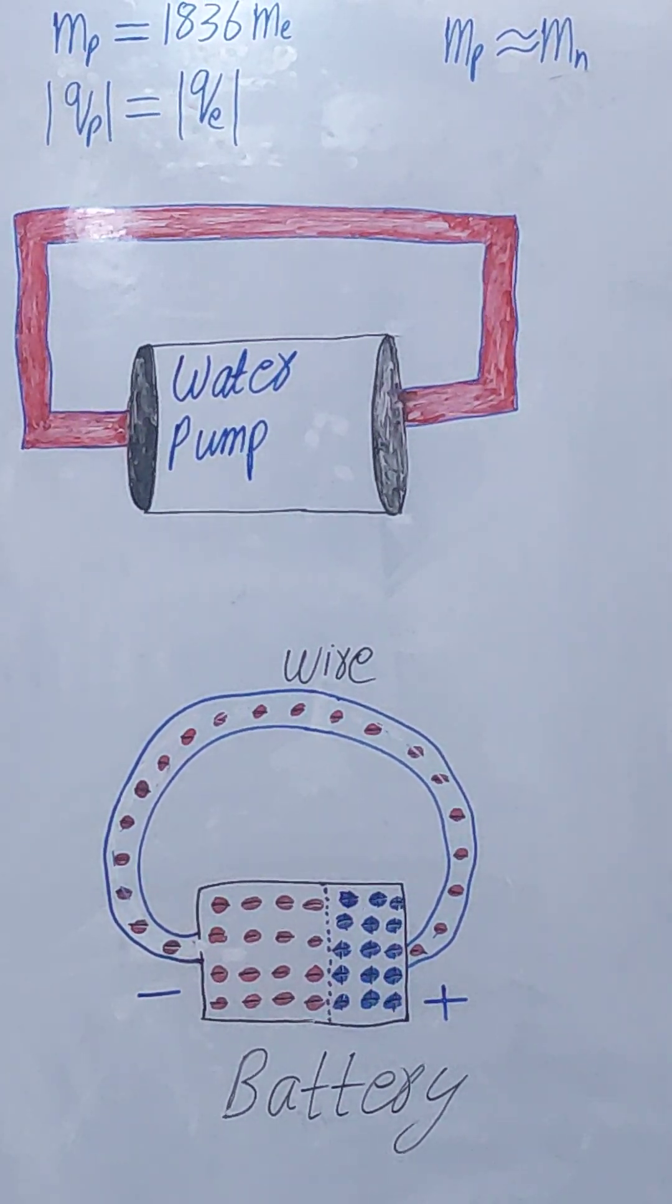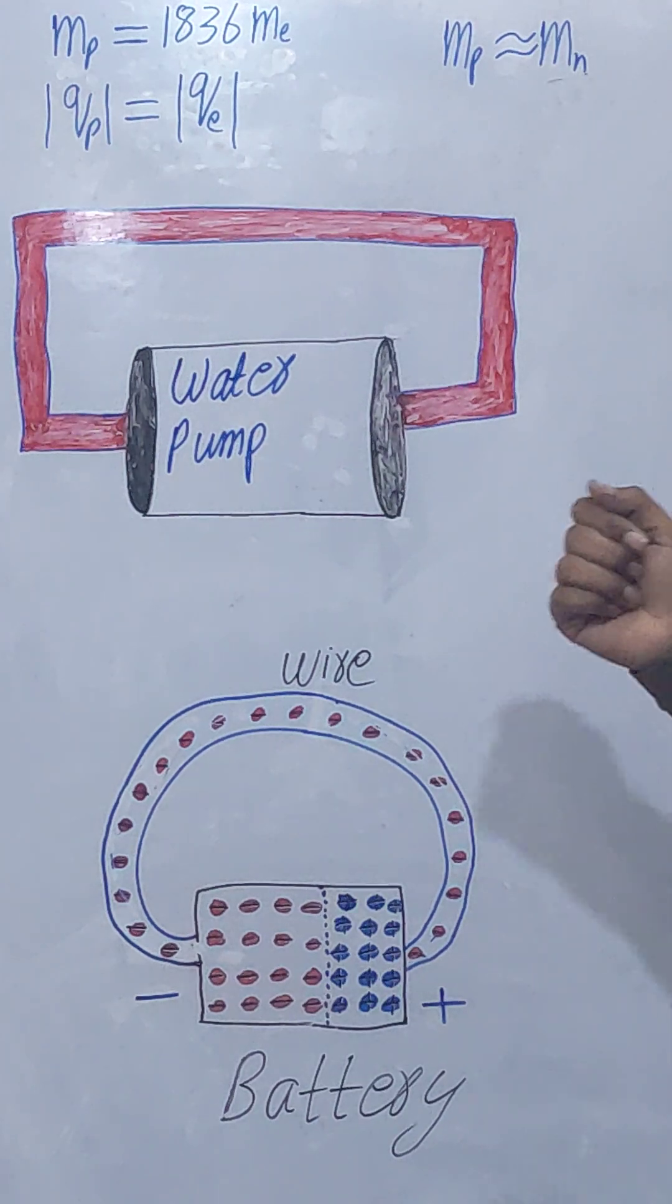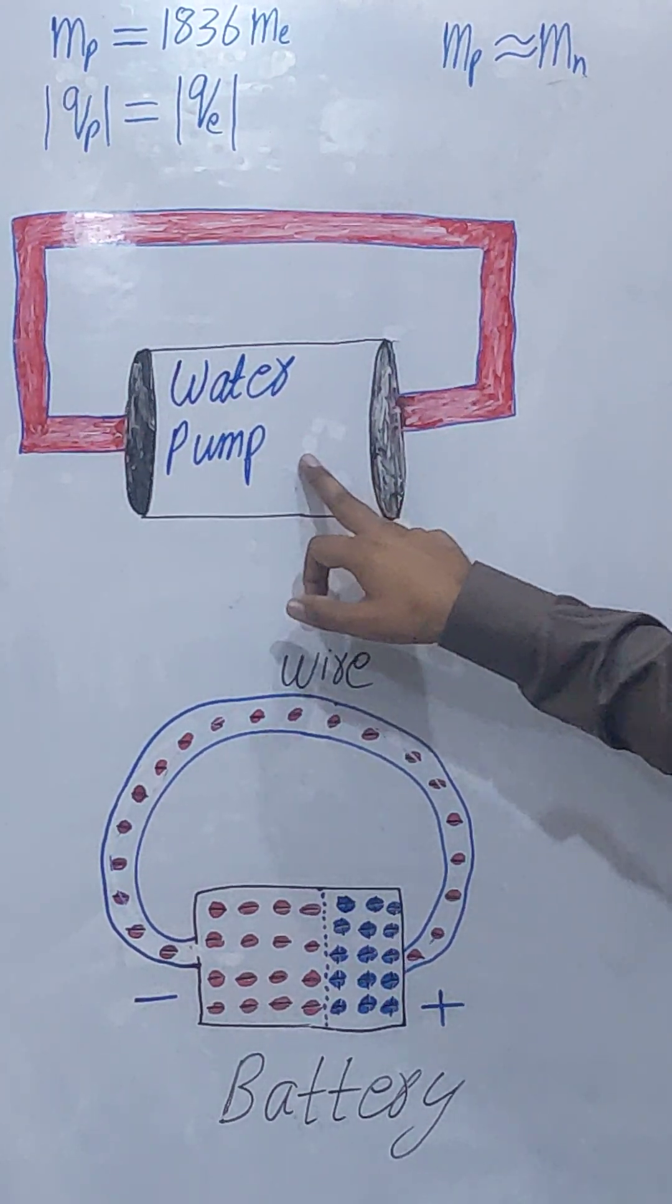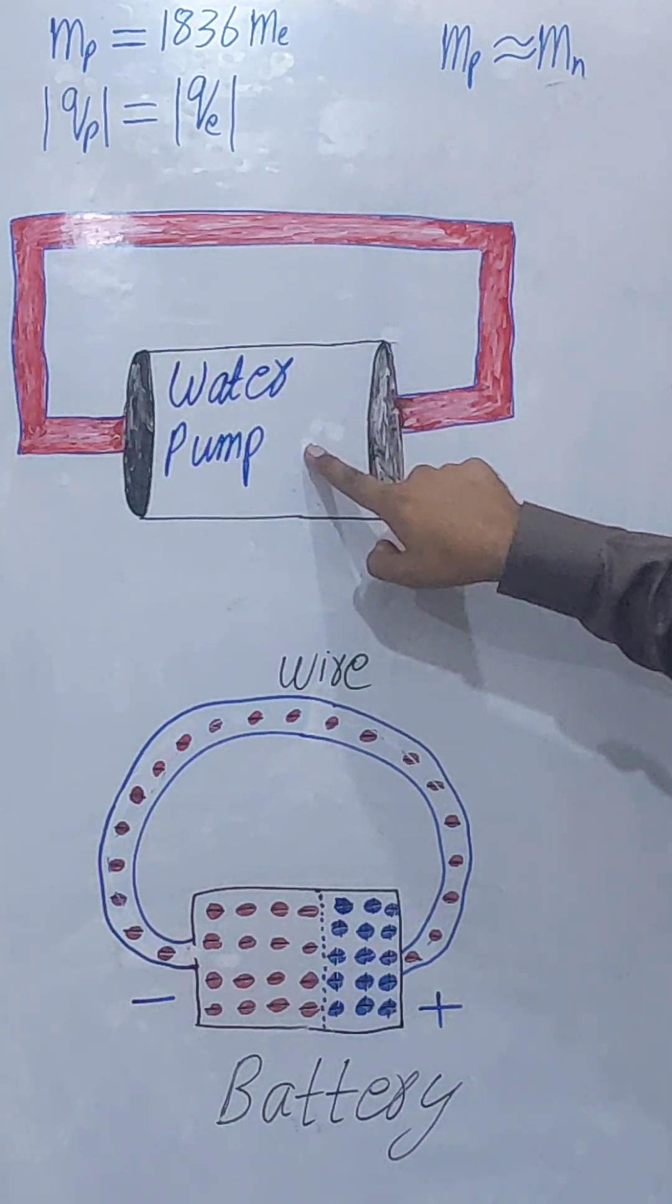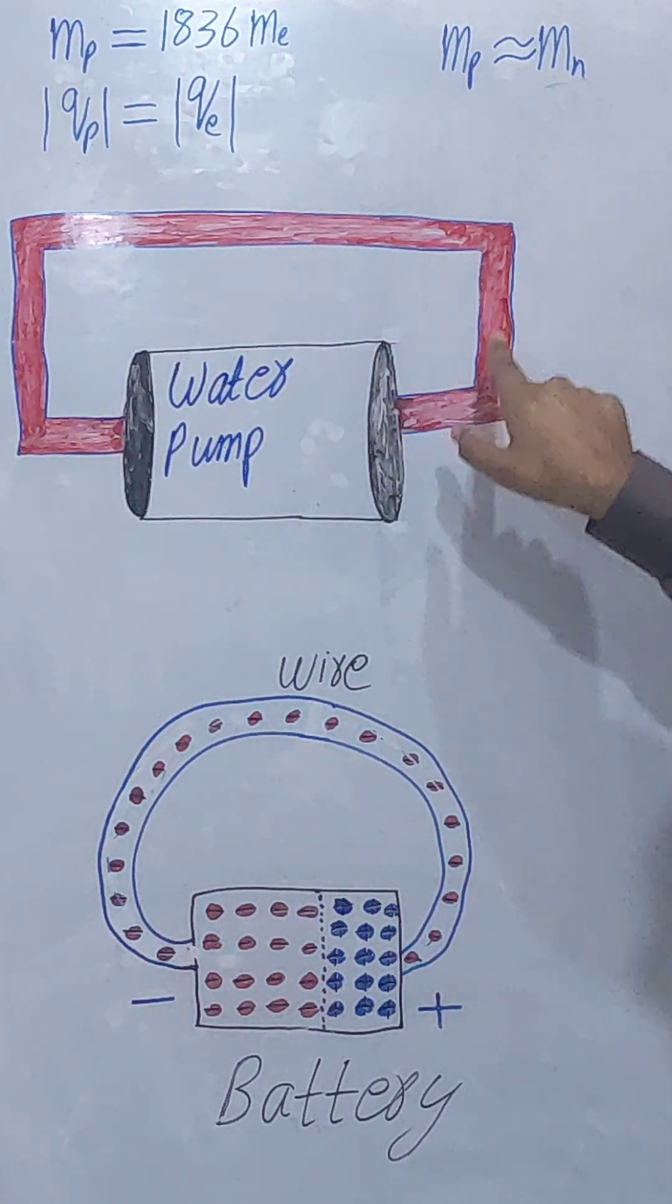Current. What actually is the current? For example, a water pump and a pipe filled with water. If we turn on the water pump, it will circulate the water through the pipe.